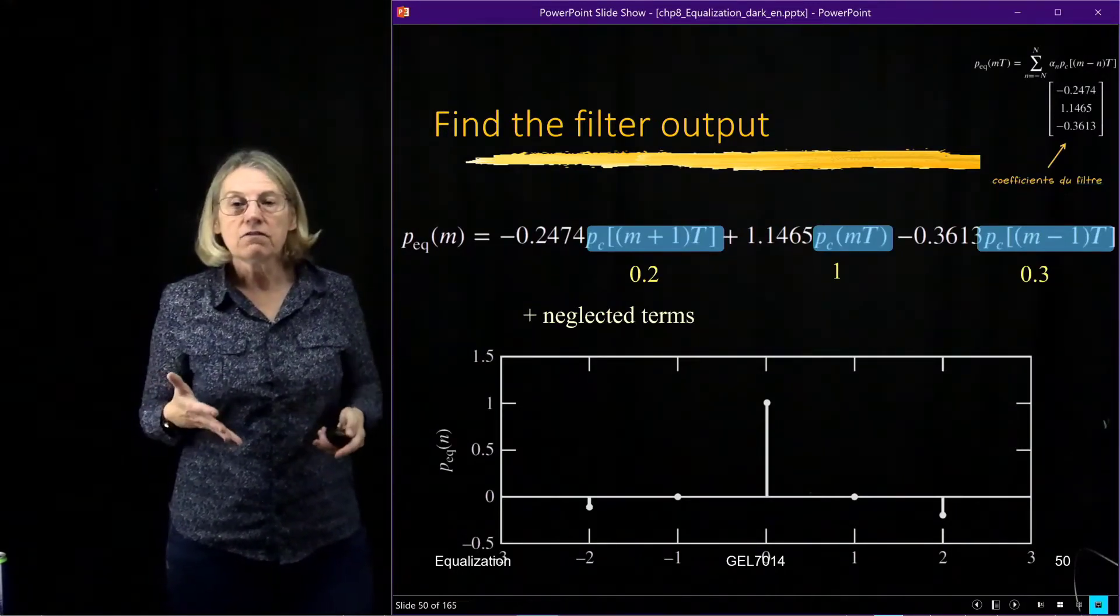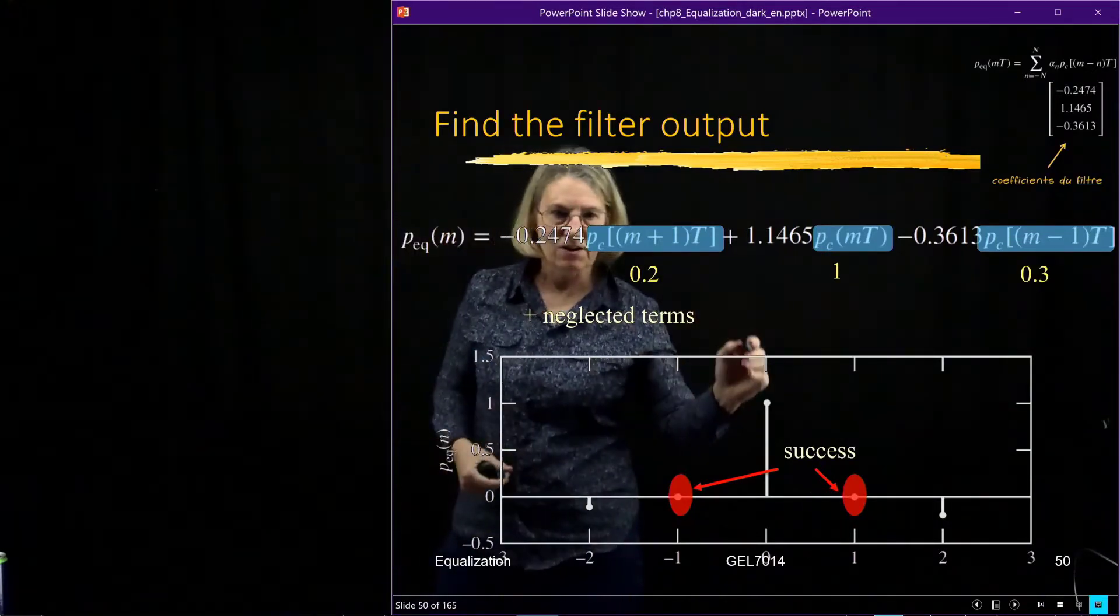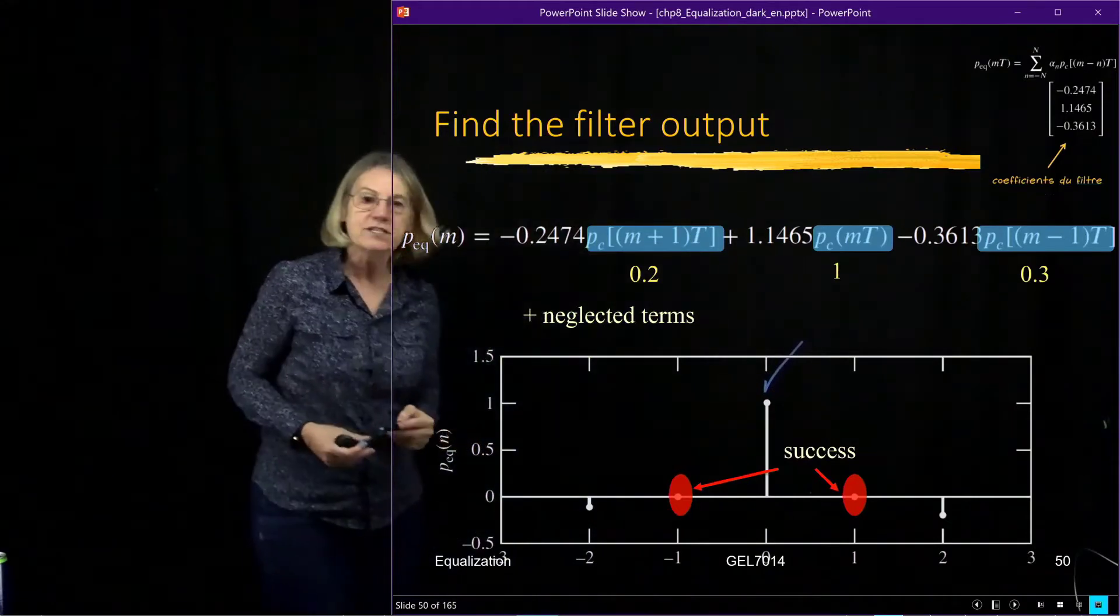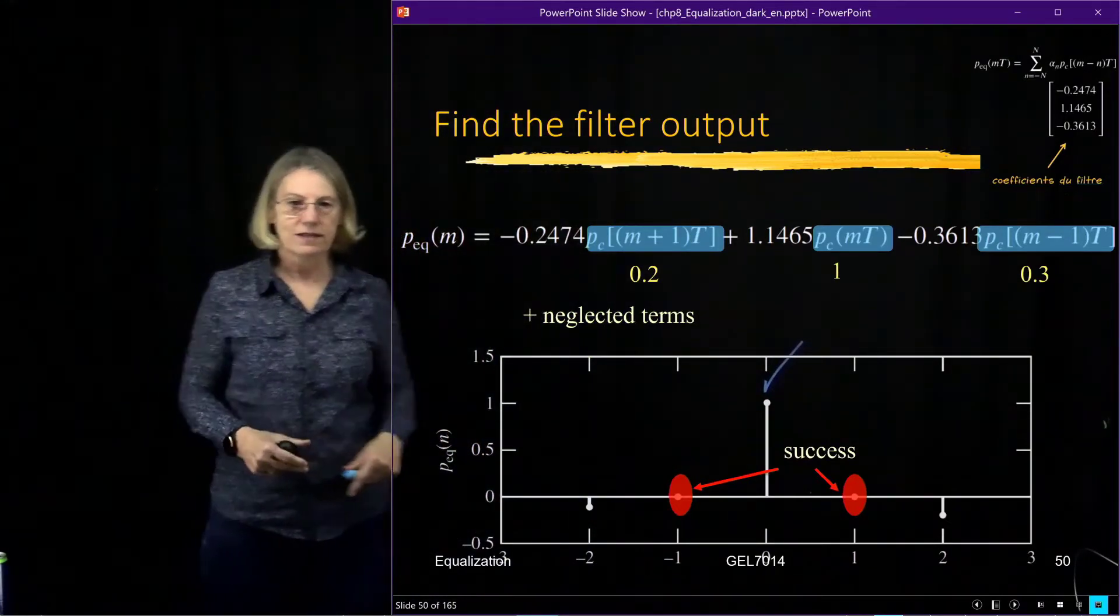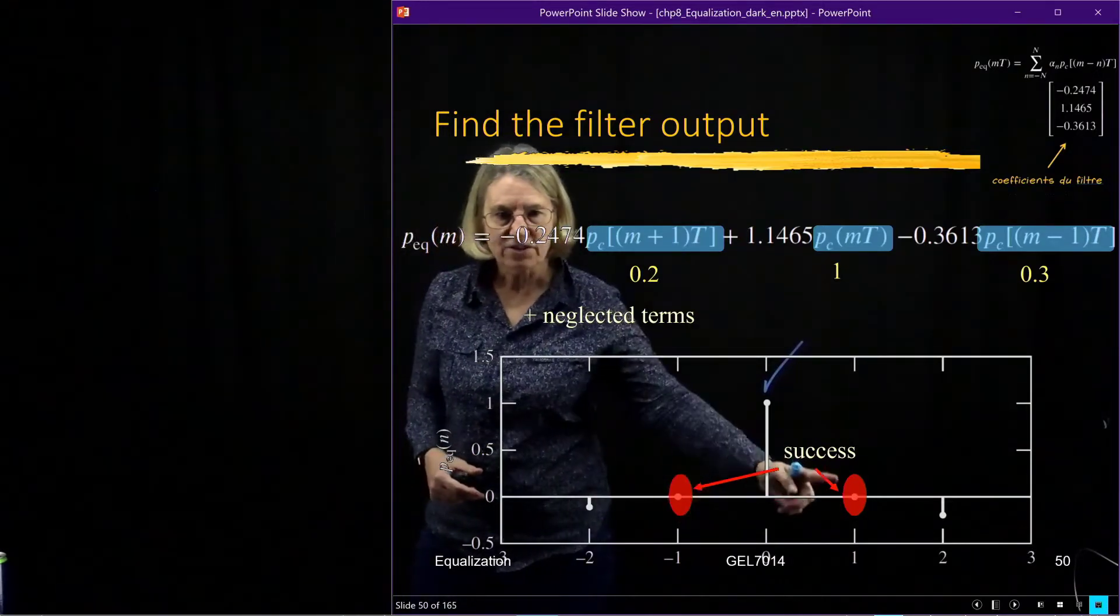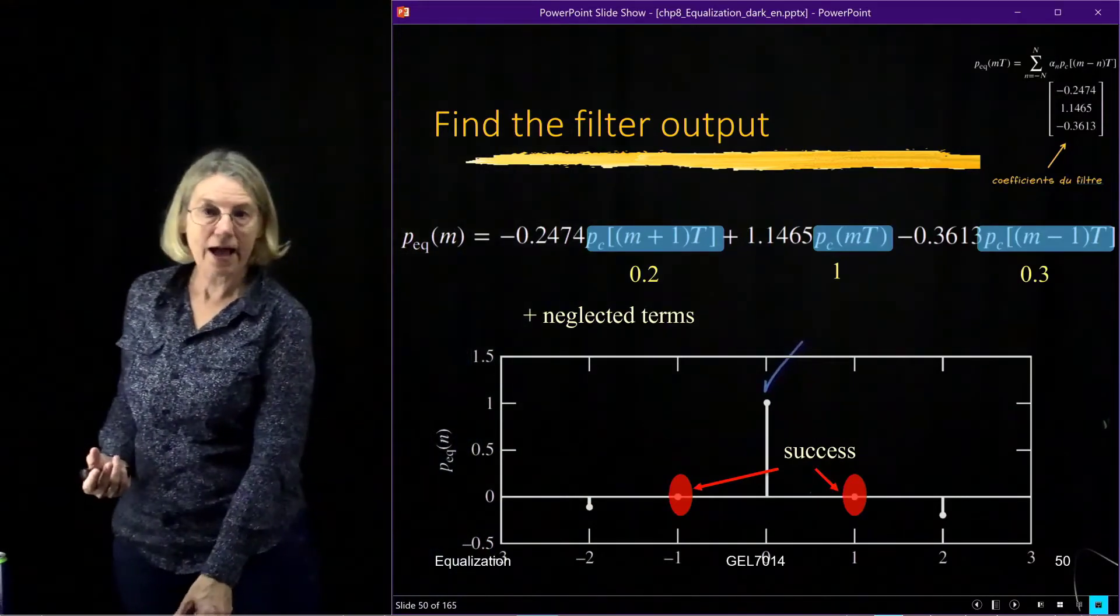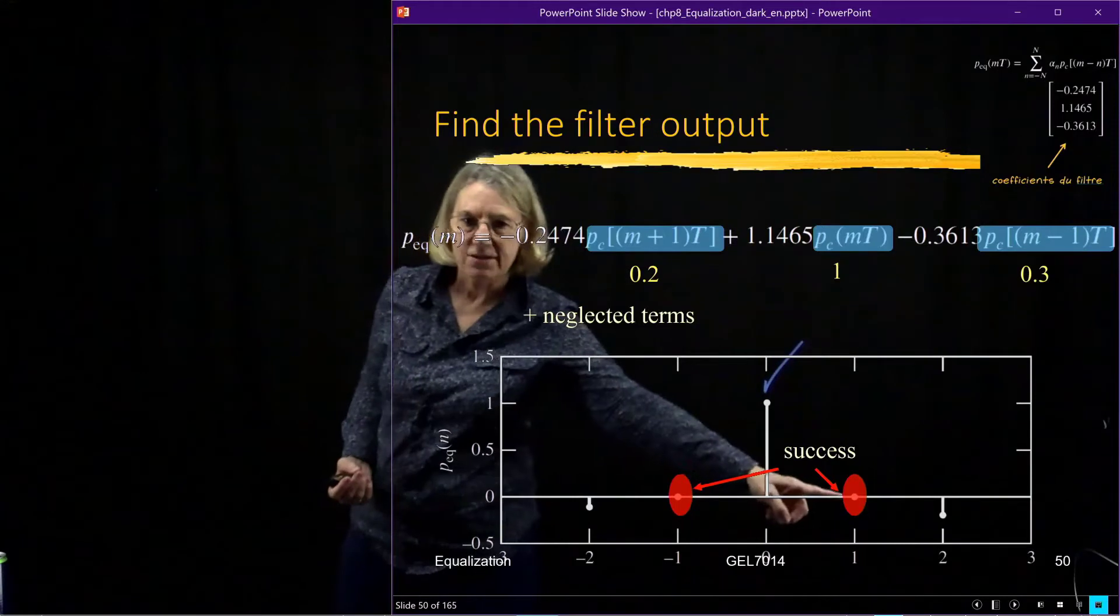Well first of all it's pretty clear that I get the 1 here on the main output at time equals 0. If I look at the output on either side I get 0 because those are the three taps and it worked perfectly. I got my 1, got my 0, got my 0.